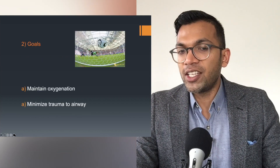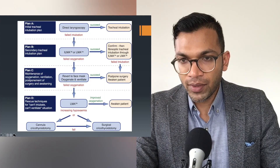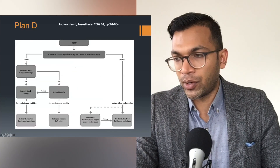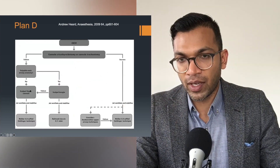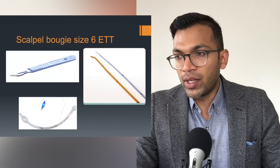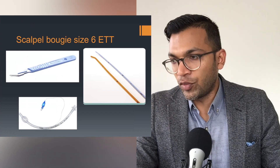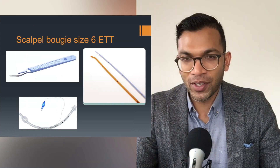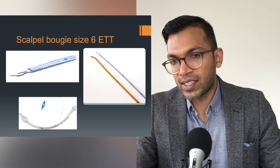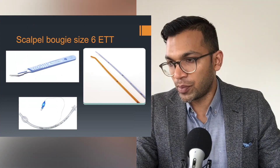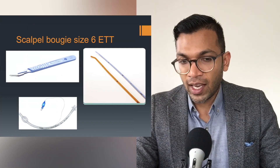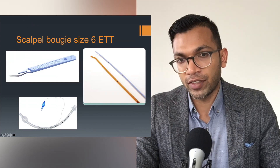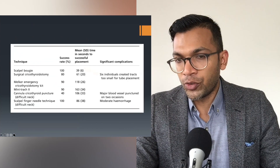My goals in a CICO situation are maintaining oxygenation and minimizing trauma to the airway. I'll give you resources on how we approach the surgical airway, but I just need to give you the structure. The easiest thing to perform without failure, and the easiest thing to explain in an exam or assessment, will be the scalpel-bougie and size-six tube technique. I'll provide resources to learn that - I'm just giving you the framework and the logic.